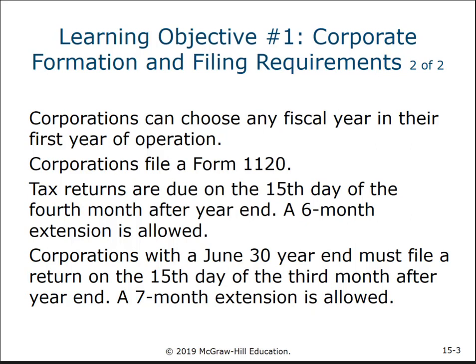Corporations file Form 1120, except for S corporations which file Form 1120-S — that return looks a lot more like the partnership return than it does the regular 1120. Tax returns are due on the fourth month, fifteenth day, so for a calendar year that's April 15th — the same date as individuals. A six-month extension is allowed for corporations, just like it is for individuals.